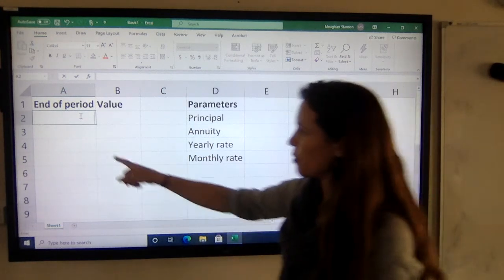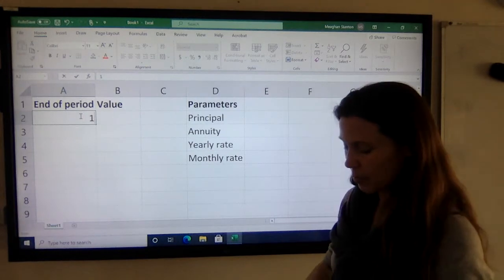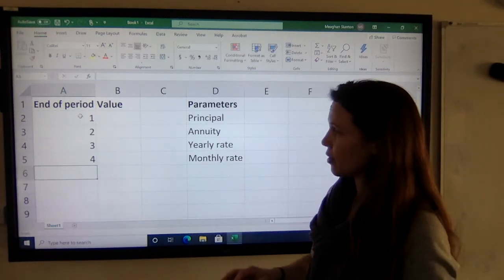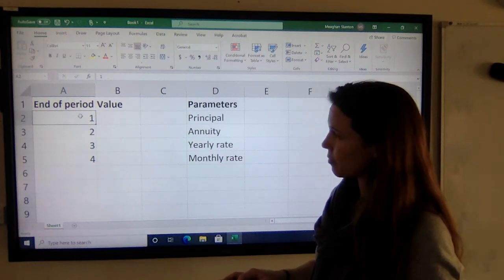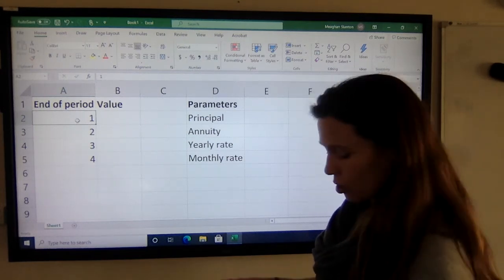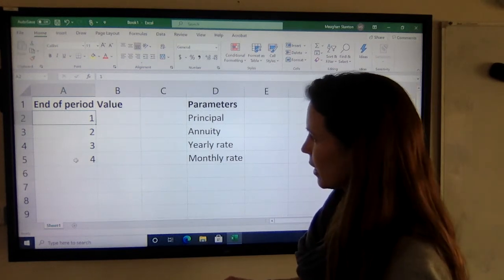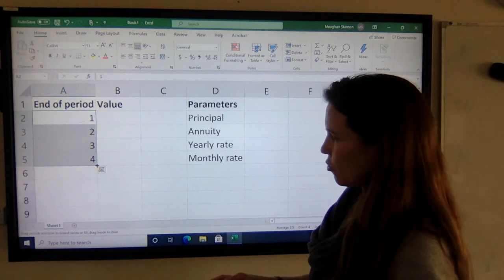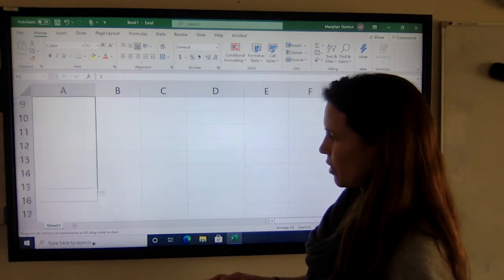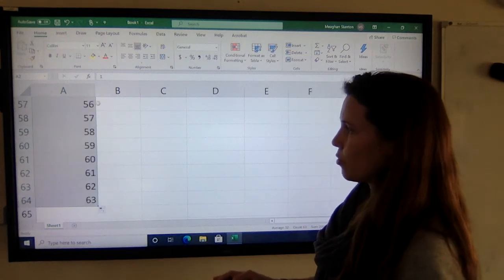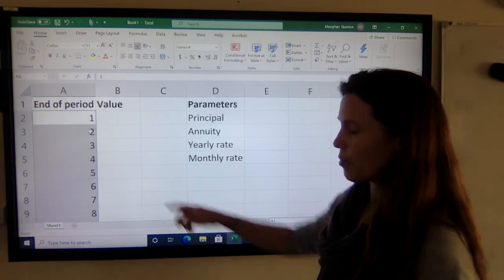I'm going to start by listing the time periods, calling them one, two, three. These could be months, weeks, or years. A quick and easy way to make this list is to select the cells you've done, go to the bottom right corner, and drag it down as far as you want. It will auto-fill all those numbers for you.